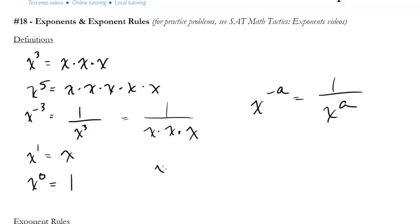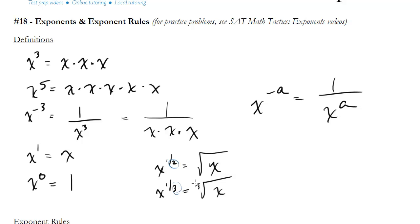How about fractional exponents? Just like negative exponents, these don't come up too often. If I have x to the half, this is an important one to know — x to the half is the same thing as the square root of x. x to the one third is the same thing as the cube root of x. Whatever the fractional denominator is — 2 or 3 — you just make that into your root. So if I had x to the 3 sevenths, this is the seventh root of x cubed.